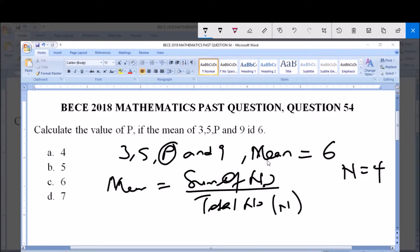We are given the mean and other numbers, so with this we can say the mean, which is 6, is equal to 3 plus 5 plus P plus 9, all over 4 which is the n.